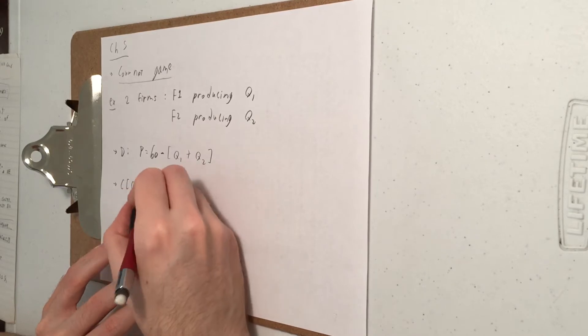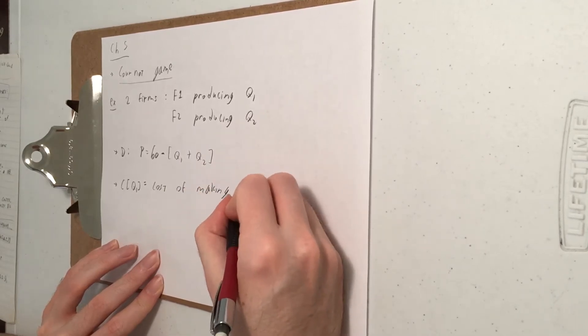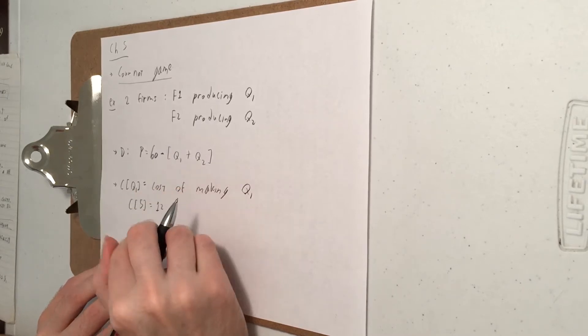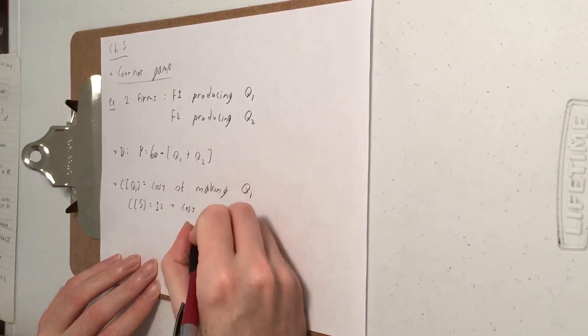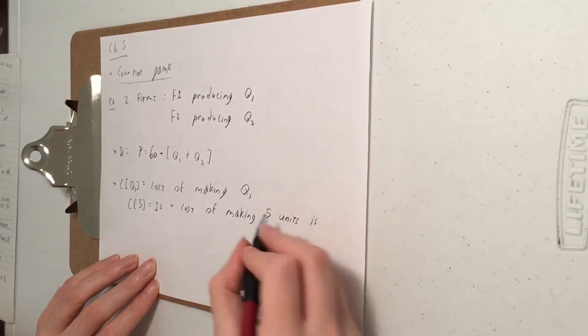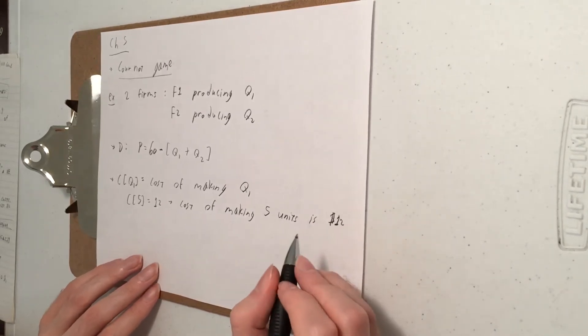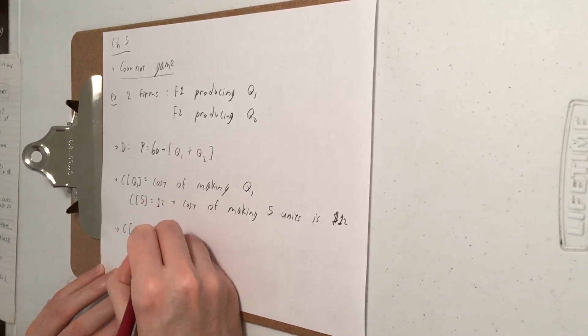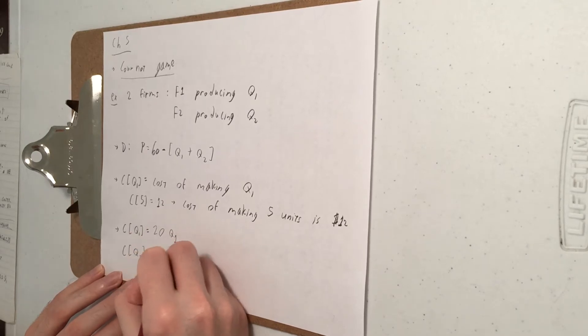So by C of Q1 I mean costs of producing Q1. So you saw something like C of 5 equals 12. What that means is that it costs $12 to make 5 units. So C of Q1 is 20Q1. C of Q2 is 20Q2.